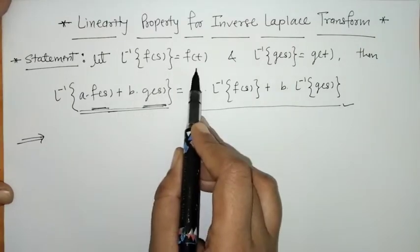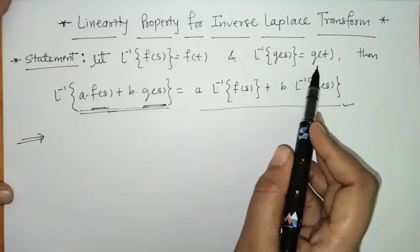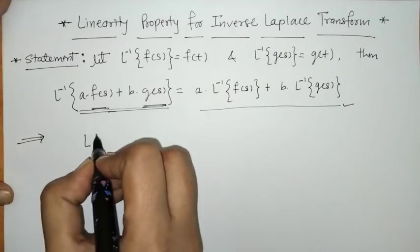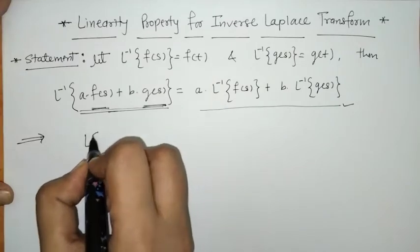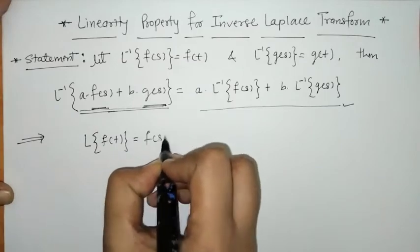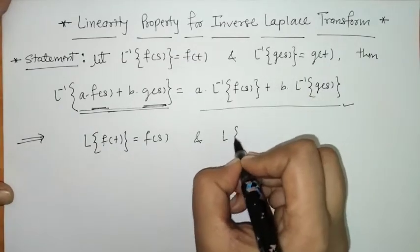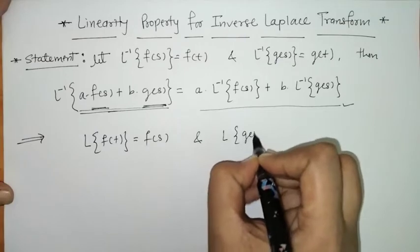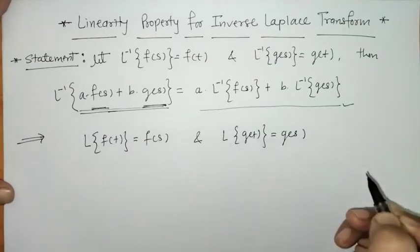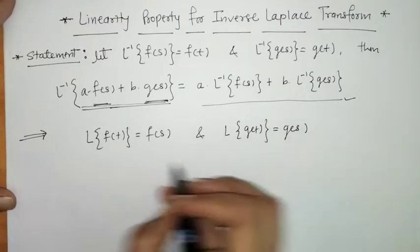We are given L⁻¹{F(s)} and L⁻¹{G(s)}, which means we can write L{f(t)} = F(s) and L{g(t)} = G(s). And we know by the linearity property of the Laplace transform,